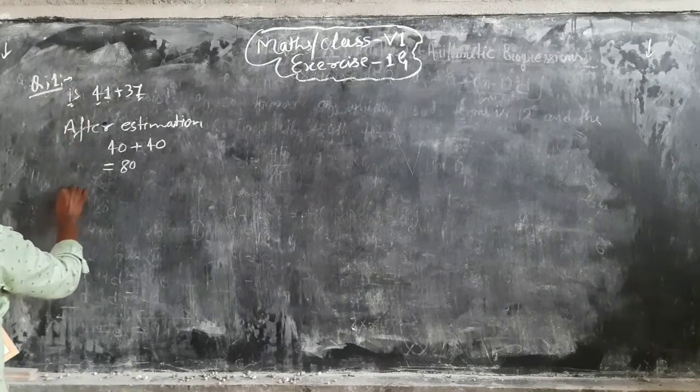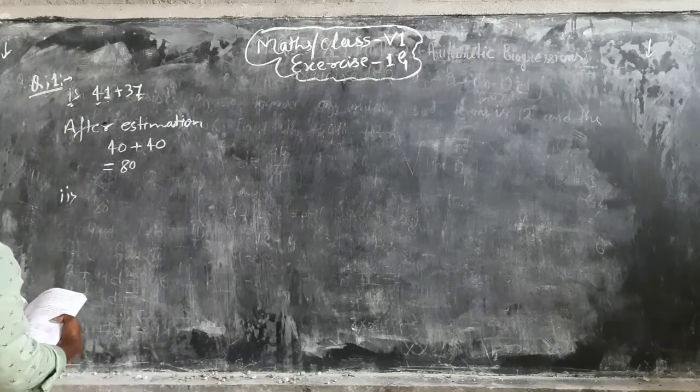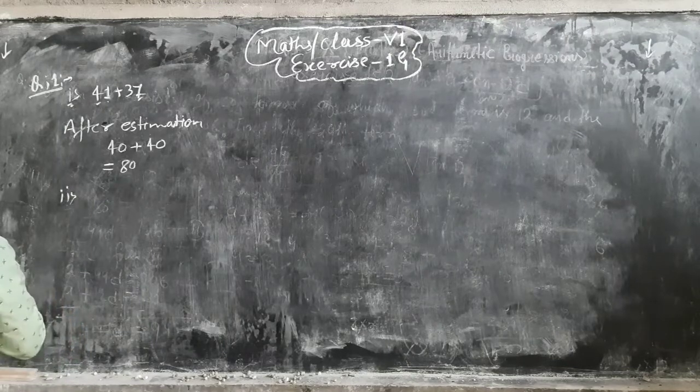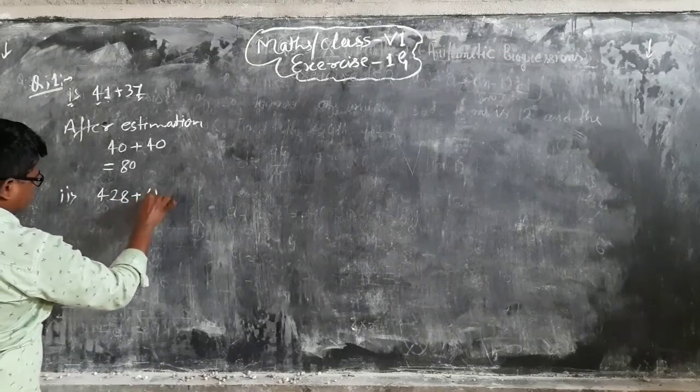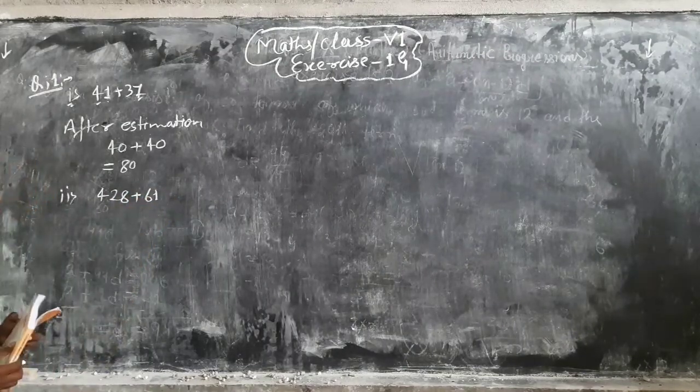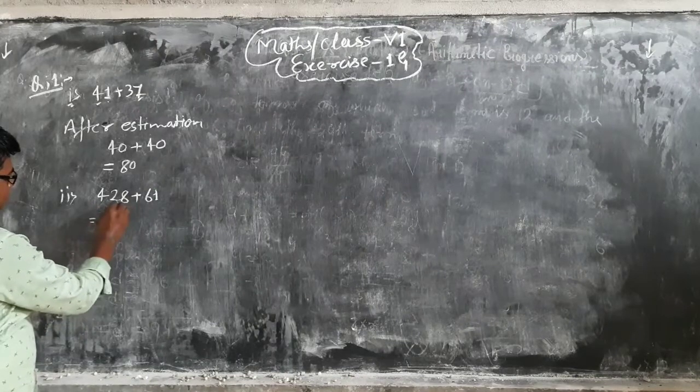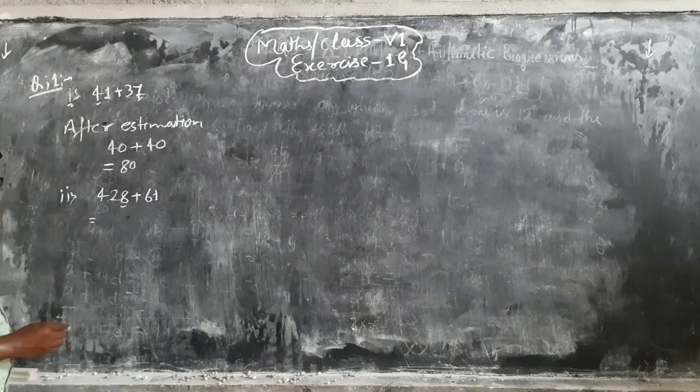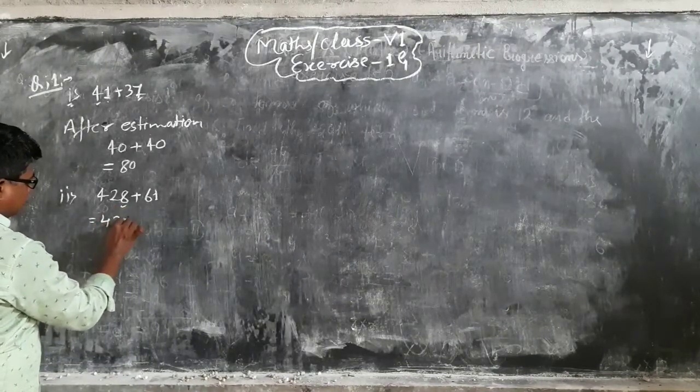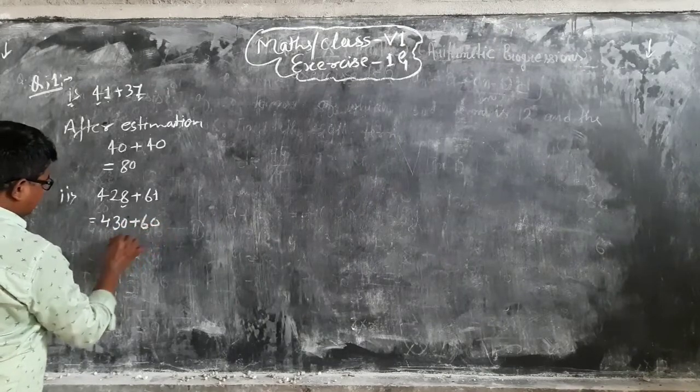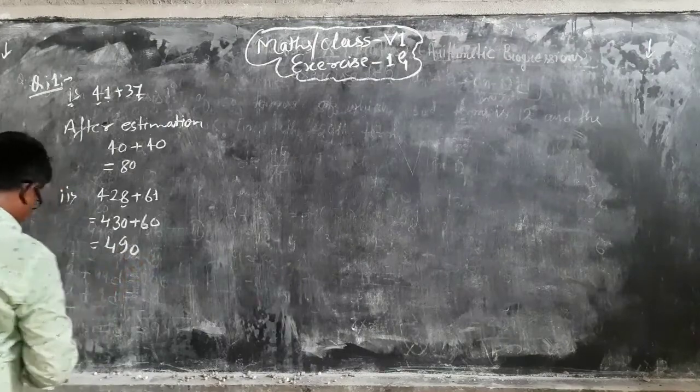Second part of our first question. What do we do? 428 plus 61. So 428, if we round it, then 8 is more than 5, so 2 becomes 3. 430 plus 60. This will be 490. Okay?